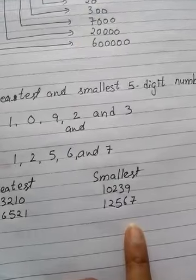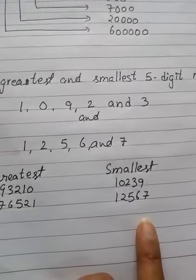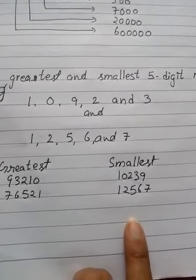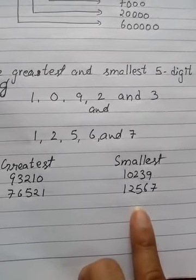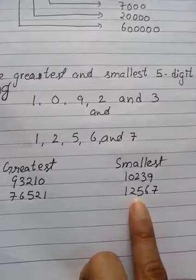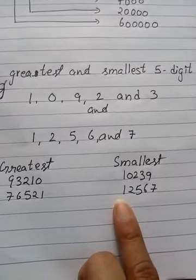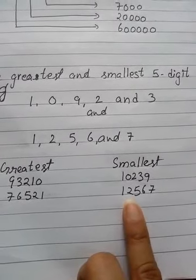And the smallest one — now there is a problem with the smallest digits. Look at the simple case first: just arrange the given digits into ascending order. With 1, 2, 5, 6 and 7, that is simply 12,567.